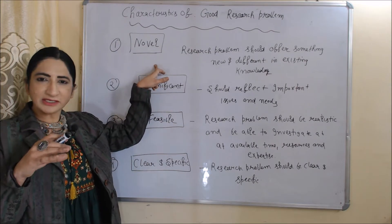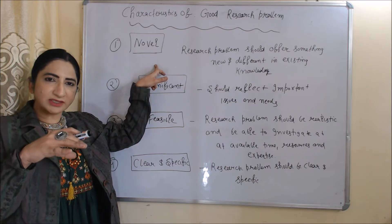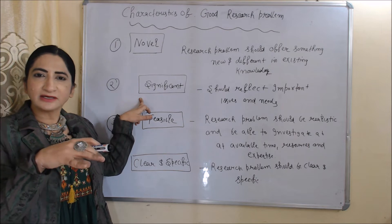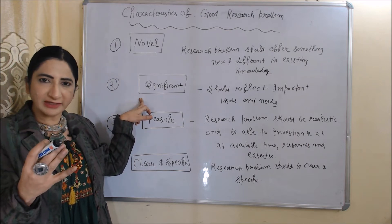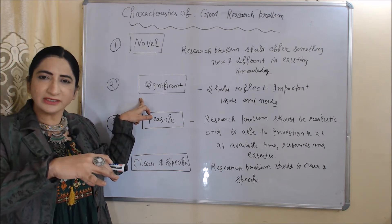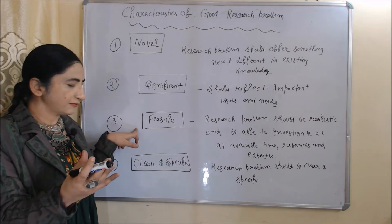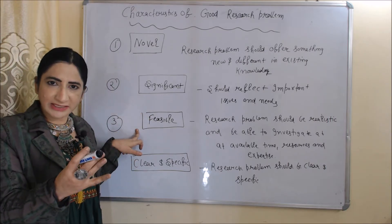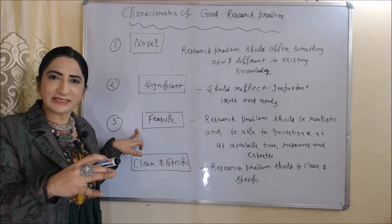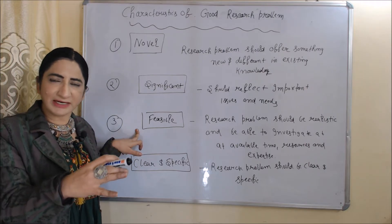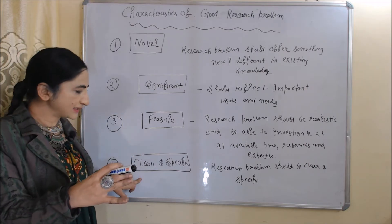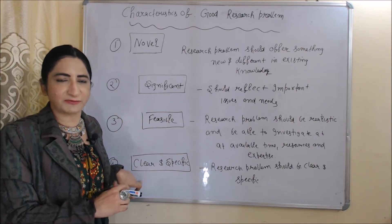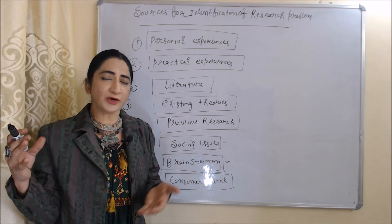Now we will see the characteristics of a good research problem. First, novel — the research problem should offer something new and different in existing knowledge. Second, significant — it should reflect important issues and needs. Third, viable — the research problem should be realistic and able to be investigated given available resources, time, and expertise. Last, clear and specific — the research problem should be clear and specific.